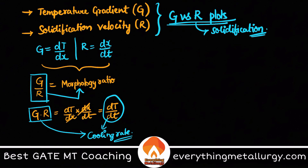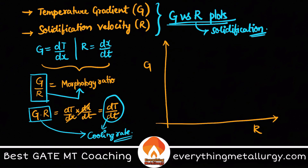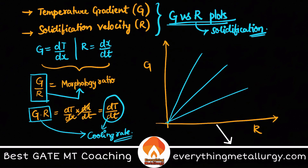Let us look at how the G versus R curve appears: G on the y-axis, R on the x-axis. As the G/R ratio changes, different regions appear. When G/R is very high — that is, the temperature gradient is very high — we get a planar solidification front. The solidification front is the interface between solid and liquid phases.